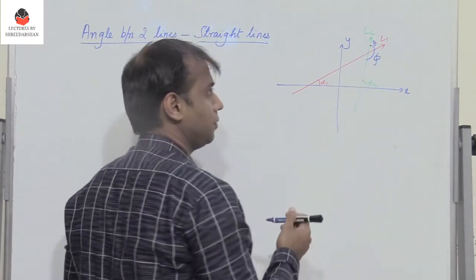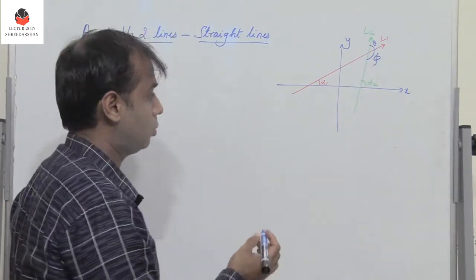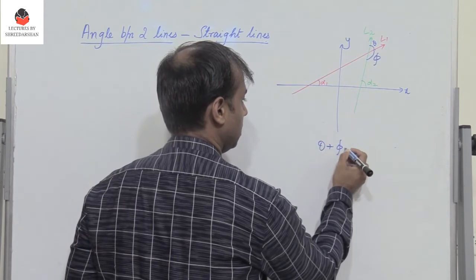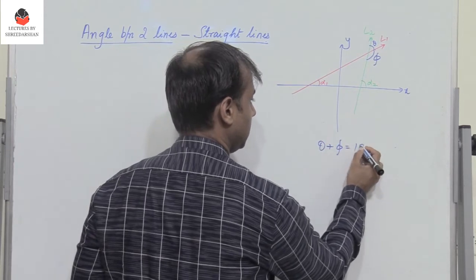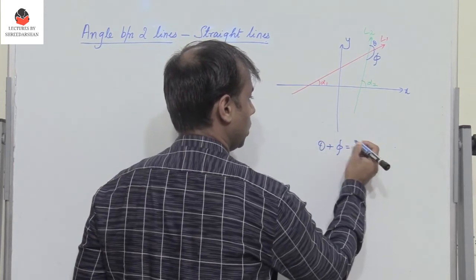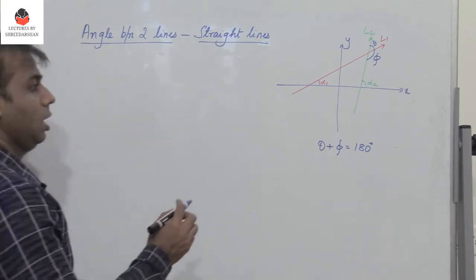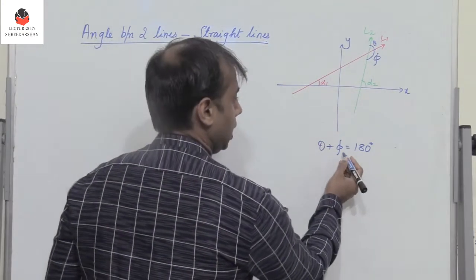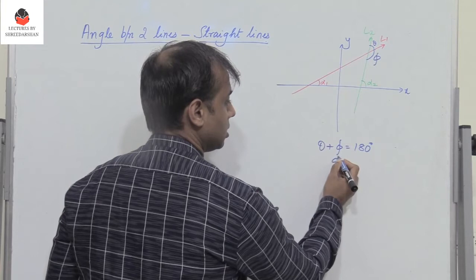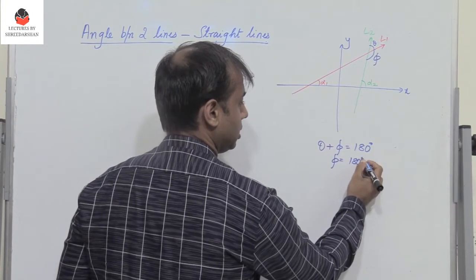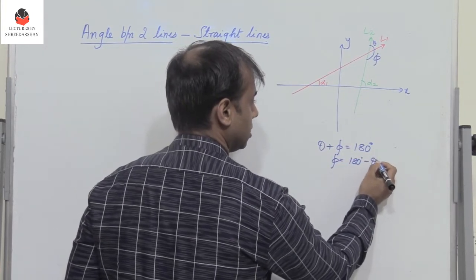We find that theta plus phi equals 180 degrees. These two are adjacent angles. Therefore, phi equals 180 degrees minus theta.